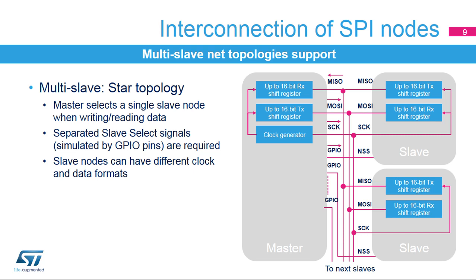When the SPI network includes more than one slave, a star topology is commonly used. The master communicates with one slave at a time, since you can only have one slave transmit data back to the master through the common MISO pin. In this topology, a separated slave select signal from the master has to be provided to each slave node. Thanks to separate slave select signals, or NSSs, the SPI data and clock format can be adapted for each slave if the multiple slave nodes do not have a common configuration.